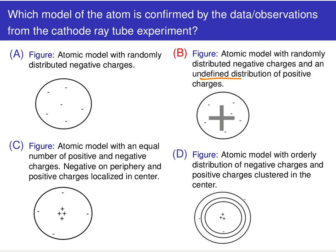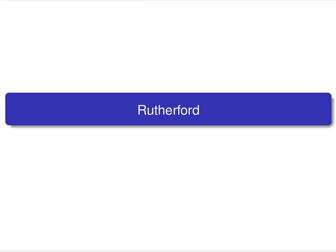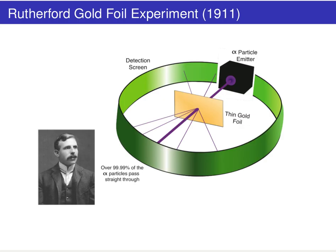As science evolves and grows, other experimental data can be brought in and the model can be tuned and refined. That's what we're going to do here. J.J. Thomson gets us to model B; the next set of experiments were performed by Rutherford.